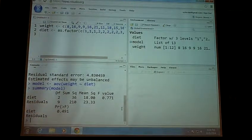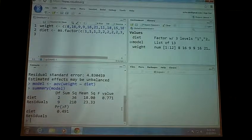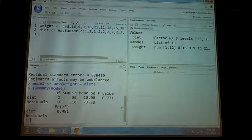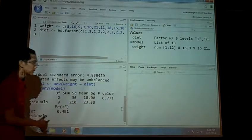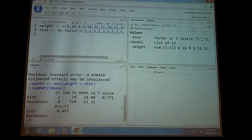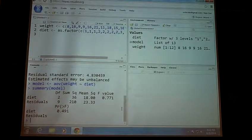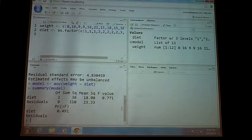And here it calculates your p-value as 0.491, so that's a very simple, simple way to do a one-way ANOVA in R. And that's that.